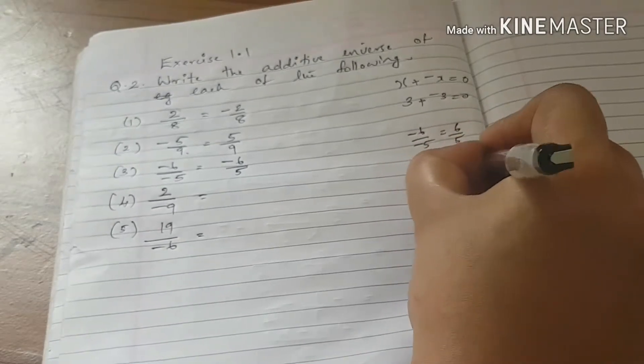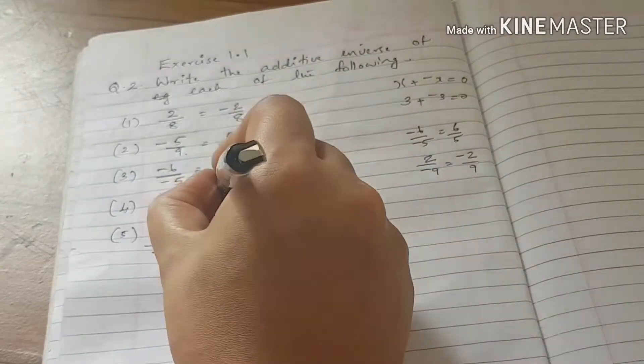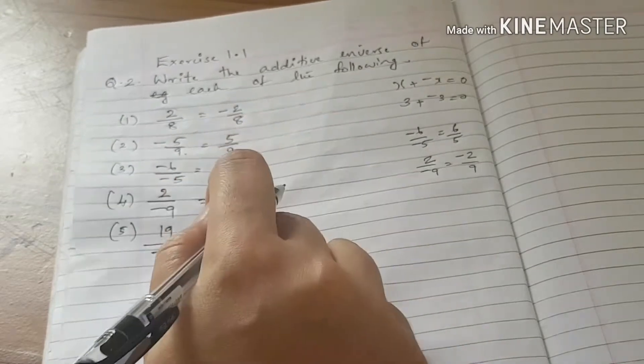For minus 2 by 9, the additive inverse is 2 divided by 9, positive 2 by 9.